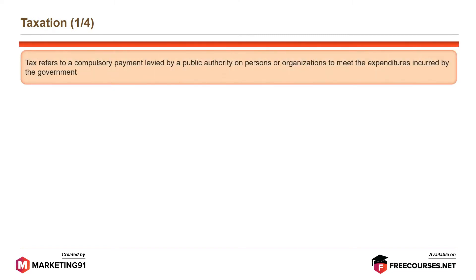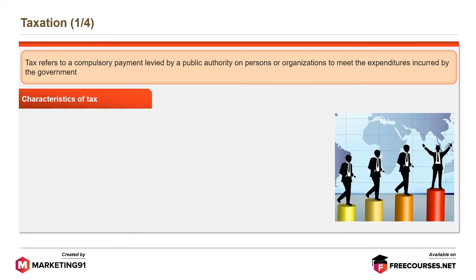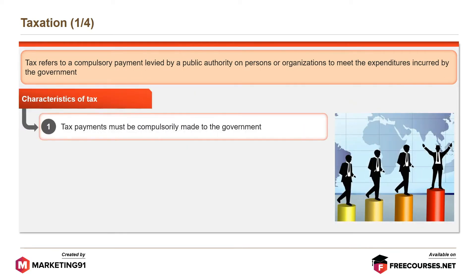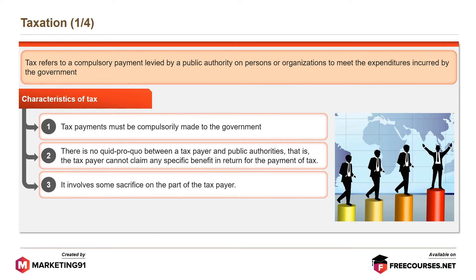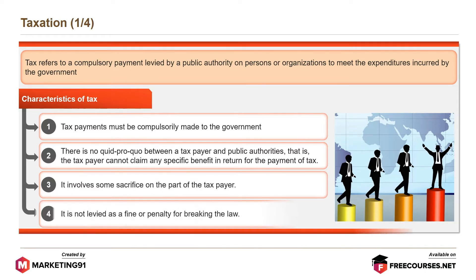The first instrument is taxation. Tax refers to a compulsory payment levied by a public authority on persons or organizations to meet the expenditures incurred by the government. Characteristics of tax: payments must be compulsorily made to the government; there is no quid pro quo between a taxpayer and public authorities, meaning the taxpayer cannot claim any specific benefit in return. It involves some sacrifice on the part of the taxpayer and is not levied as a fine or penalty for breaking the law.